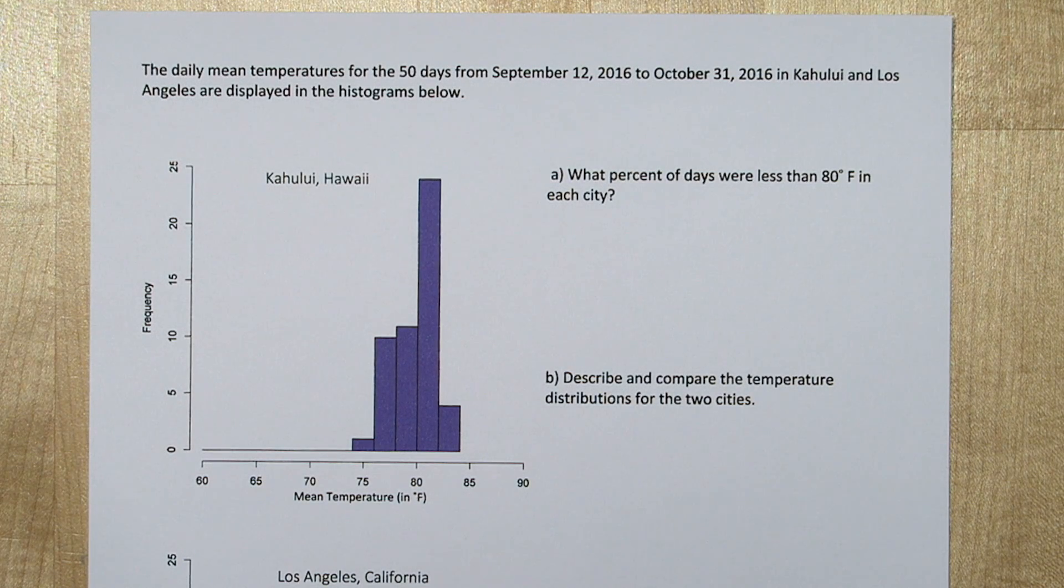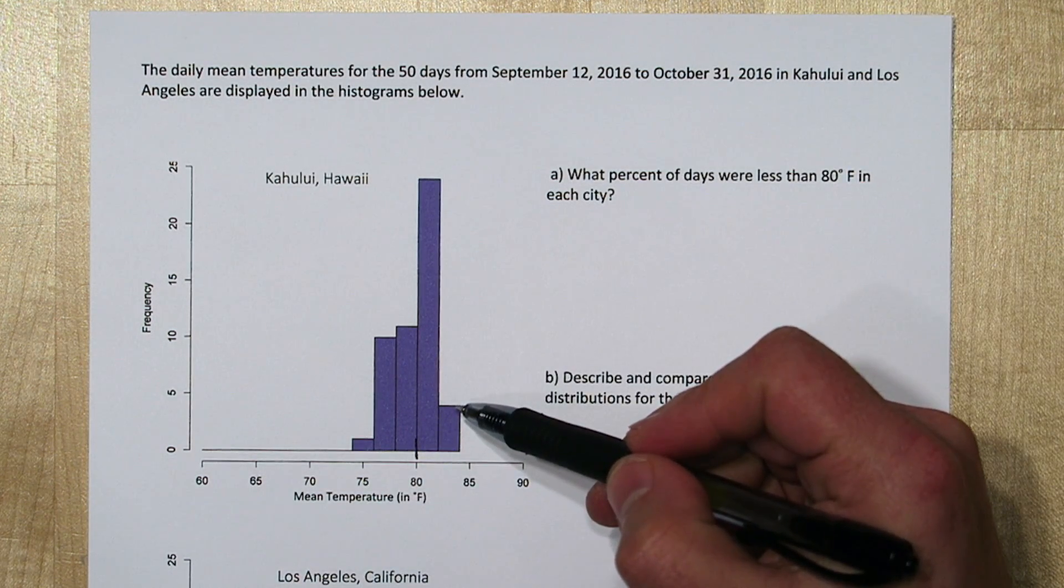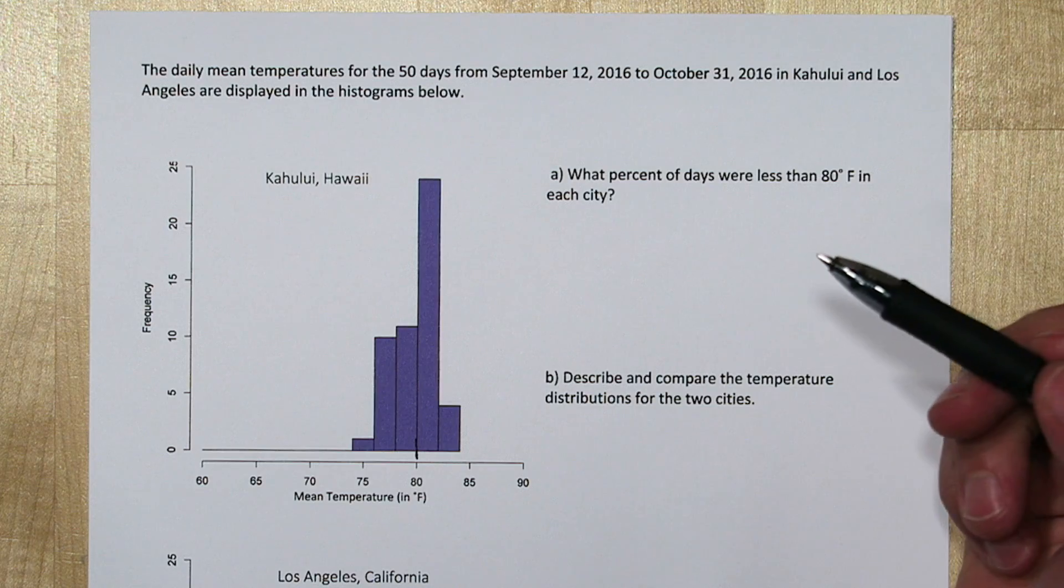The first thing we're going to do is find where 80 degrees is on each histogram. It's right here. We need to figure out what percent of days were less than 80 degrees.